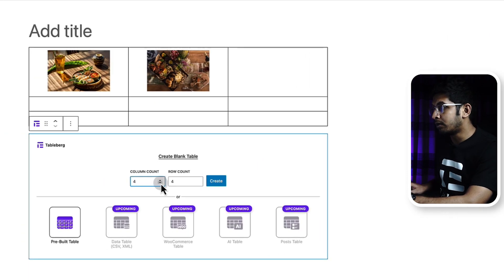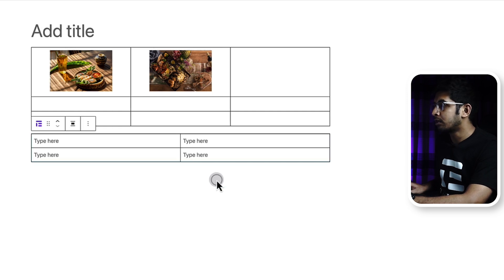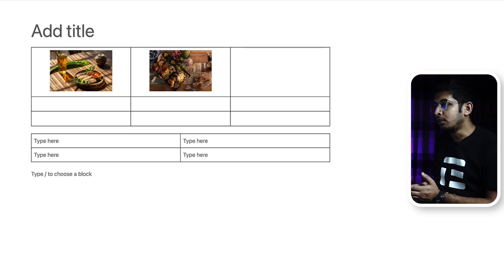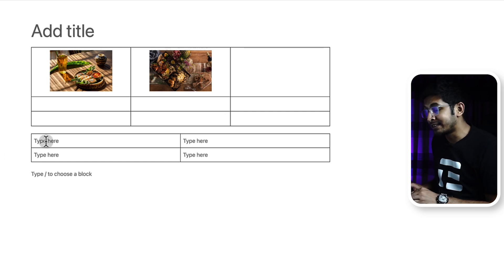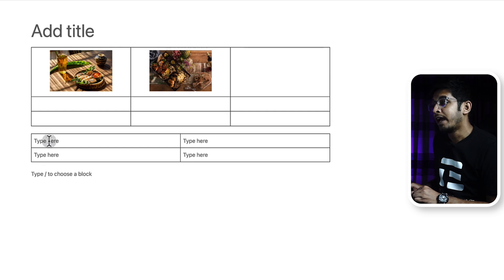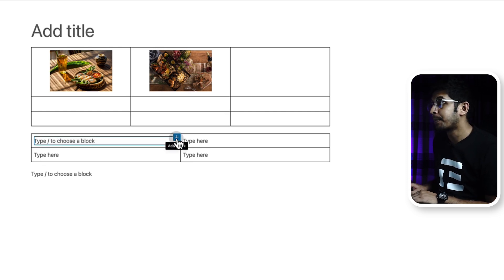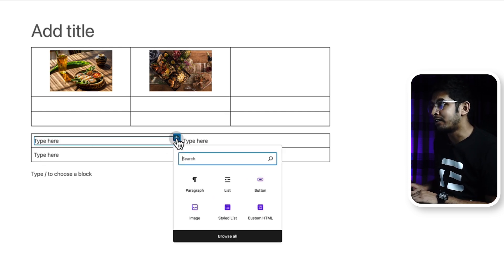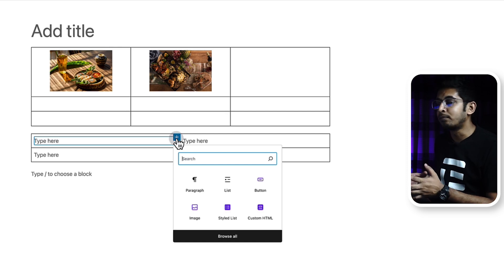Add two columns and two row counts, then click Create. This is the initial view of the table. When you click on a single cell, every cell is individually customizable. Not just that — when you click on plus inside a cell, you can add different kinds of native WordPress blocks.